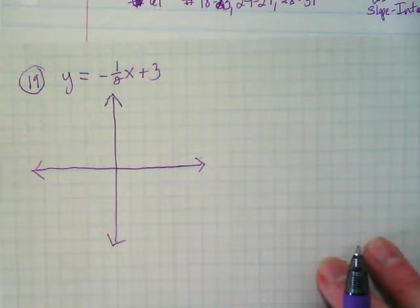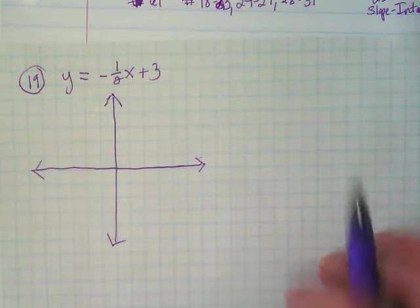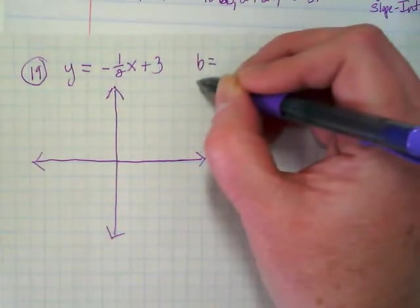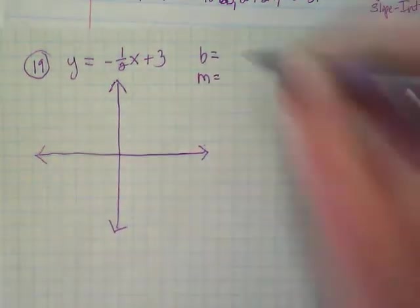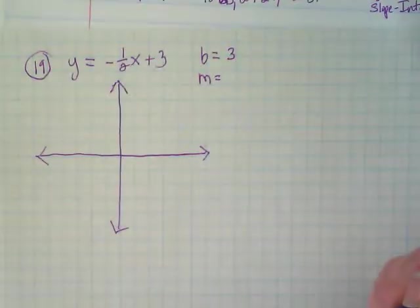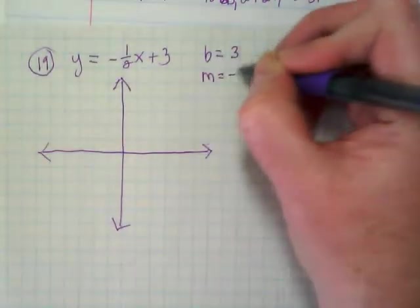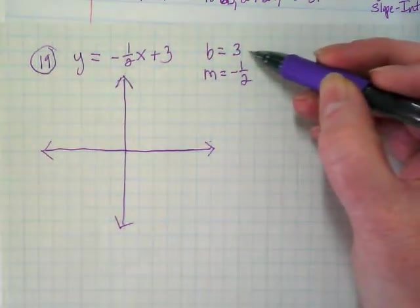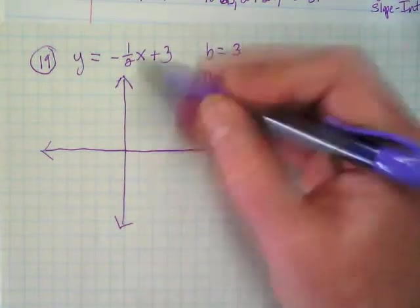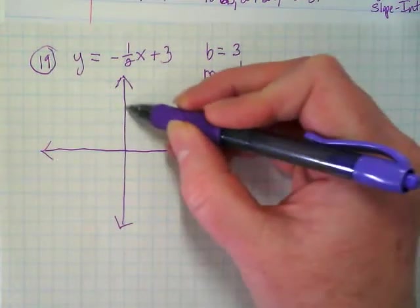Look at your notes on how to make a line from an equation. The first thing is to find the y-intercept, and the second thing is to find the slope. So what is our y-intercept here? Okay, what is our slope here? Okay, so to graph this, first thing I want to do is put the 3 on the graph. Where does the 3 go? On the y-axis. One, two, three.